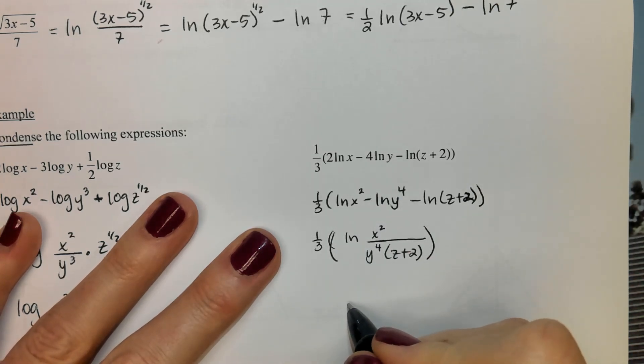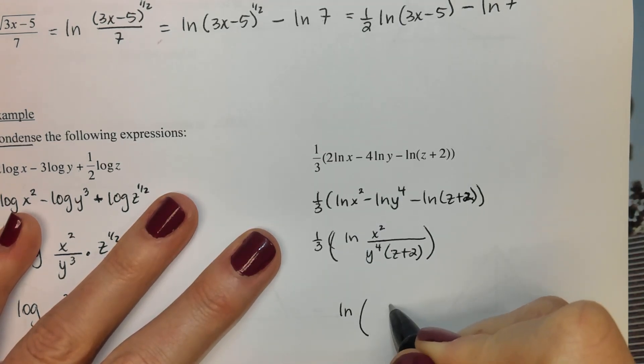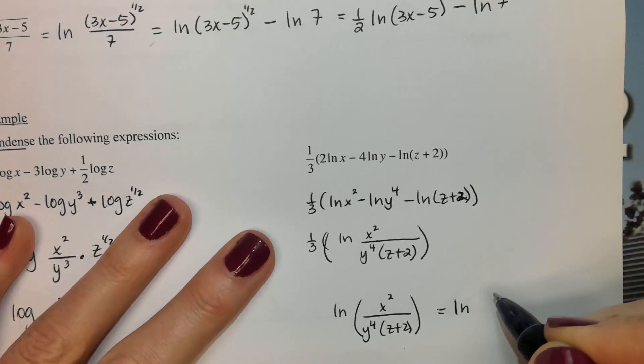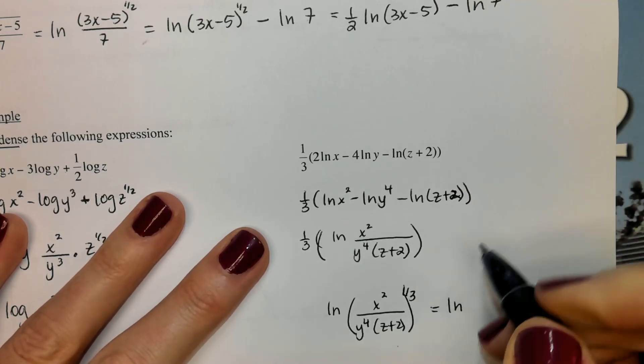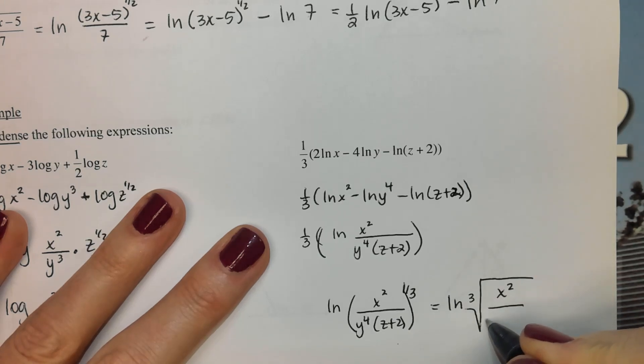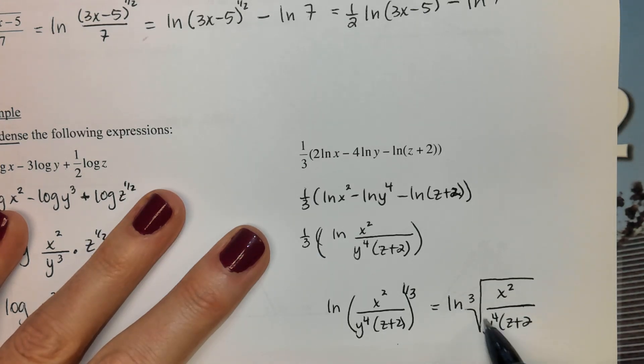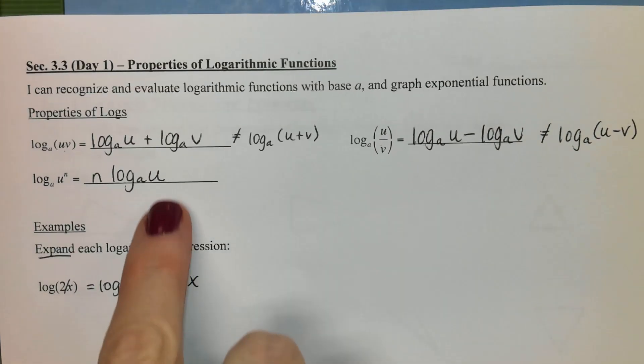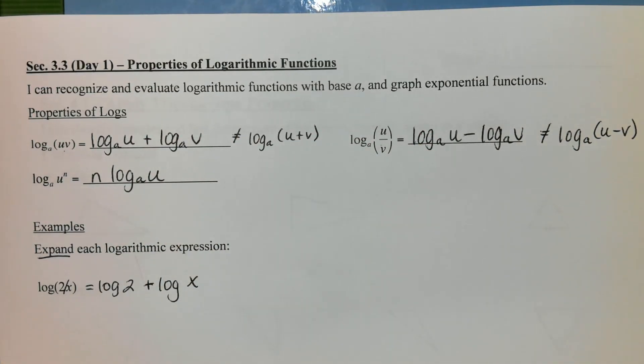And then this one-third in the end would look something like this, or you could put the one-third like this. Just make sure your natural log is never under the root. So we're doing the natural log of all those things to the third root. So that's expanding and condensing - really hinges on those three different properties.